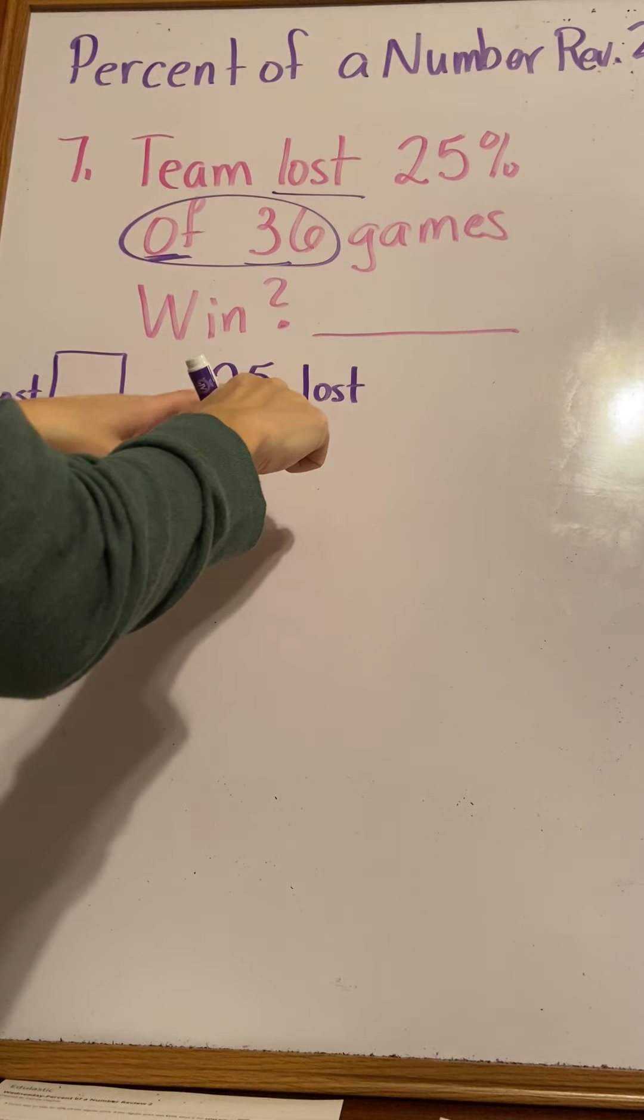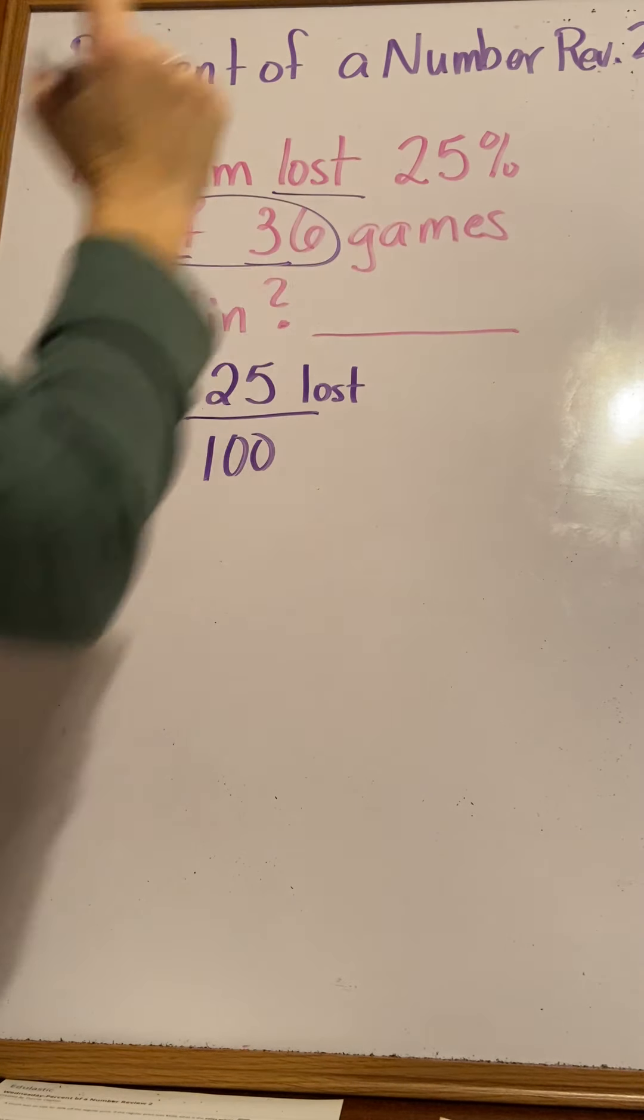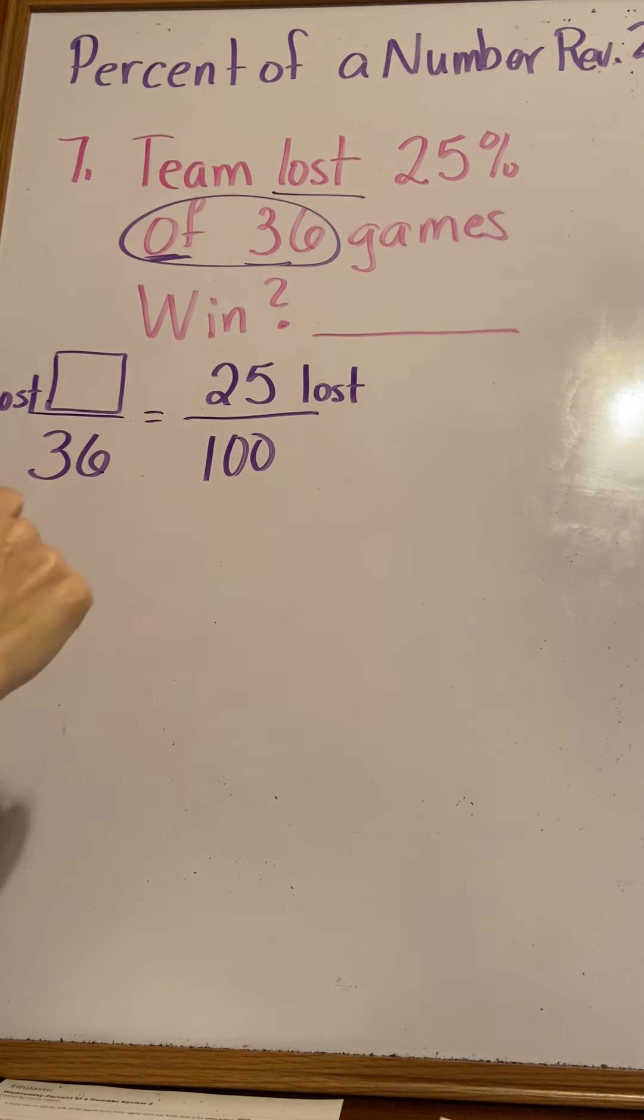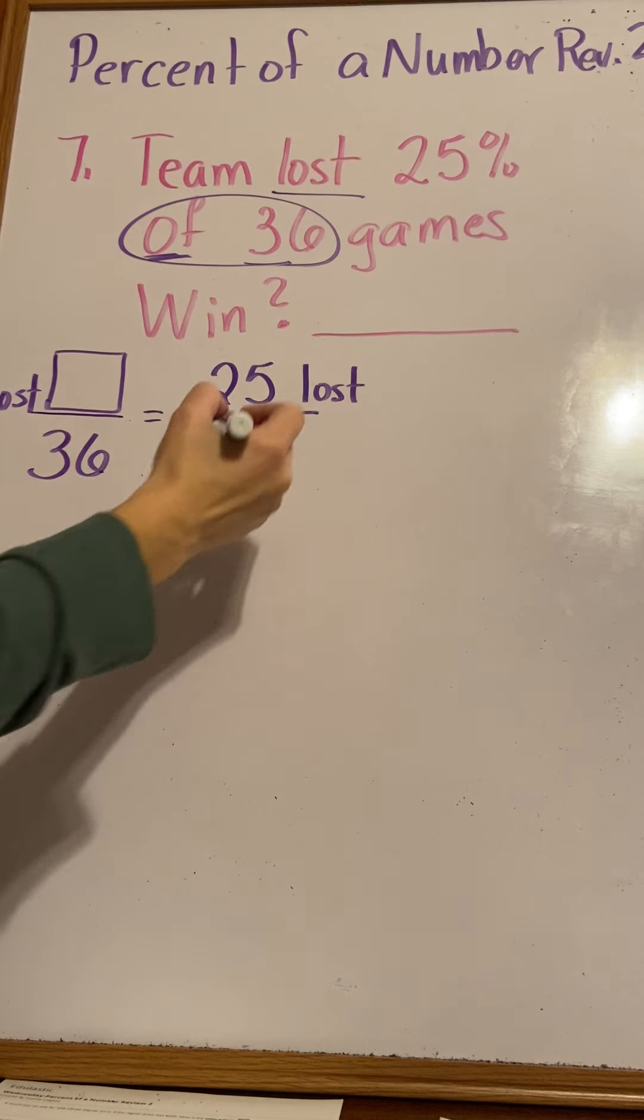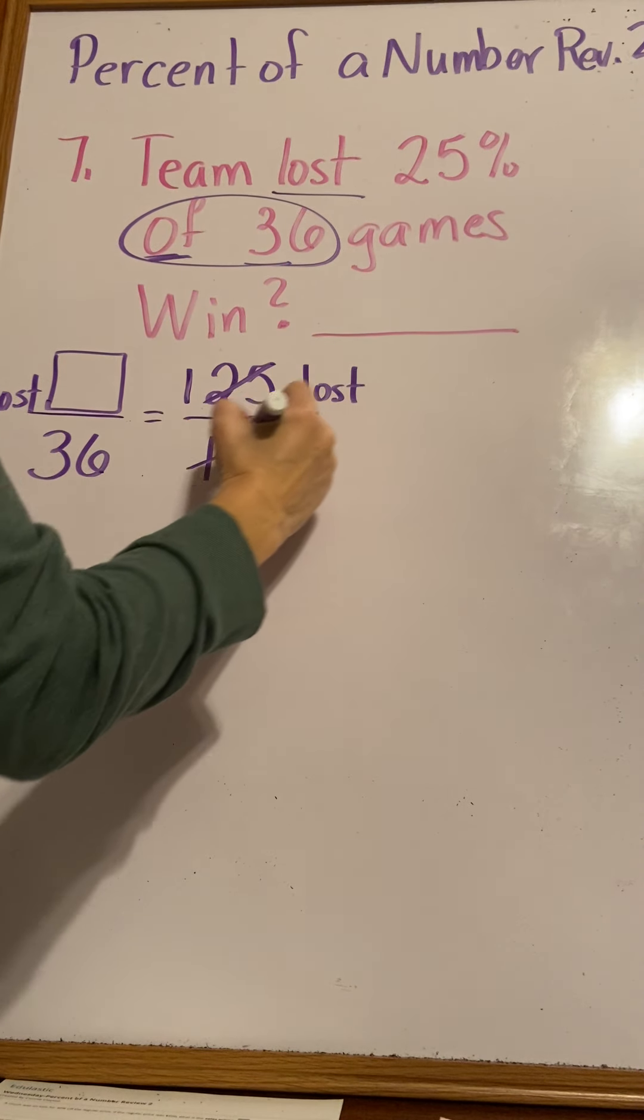We're using the percentage for the number of games that they lost. 36 won't do anything to get 100, so let's simplify that. I know that 25 hundredths is the same as one-fourth.